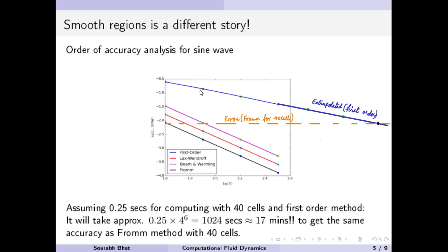Every time the mesh is refined, the amount of computation goes up by four. This is because dividing delta x by two calls for double the computation, and the time step also gets reduced by two since delta x is reduced. Therefore we have to take double the number of time steps to reach the same stopping time, meaning the total computation grows by a factor of four.